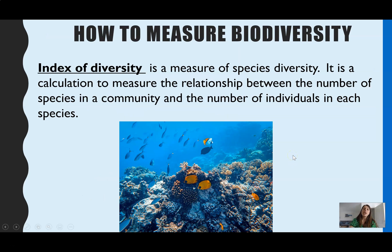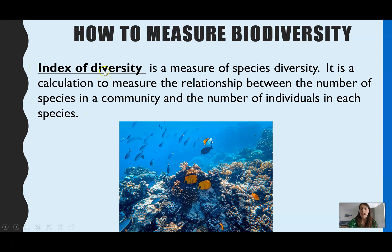The last thing you need to know in this topic is how you can measure biodiversity to monitor whether it is decreasing, and this is done using the index of diversity. This is different from species richness, which we said at the start was just the number of species, because the index of diversity also takes into account the number of individuals within each species. That distinction is a very commonly asked exam question.